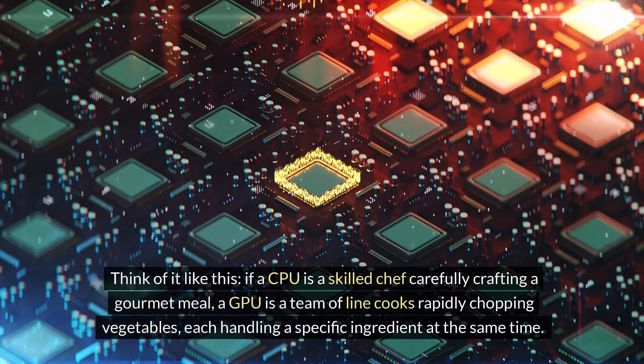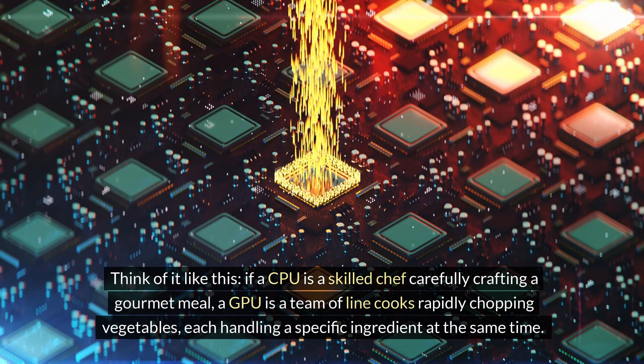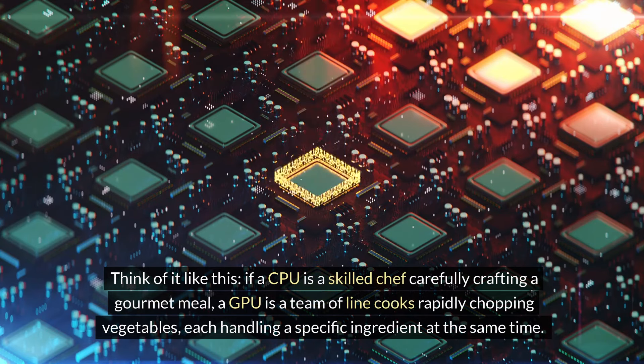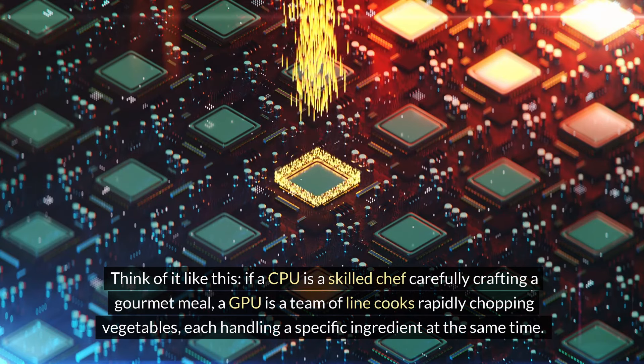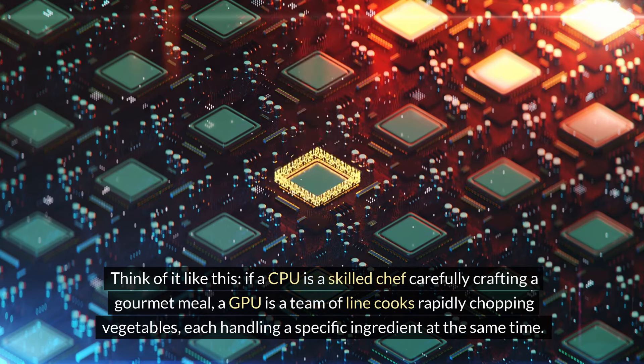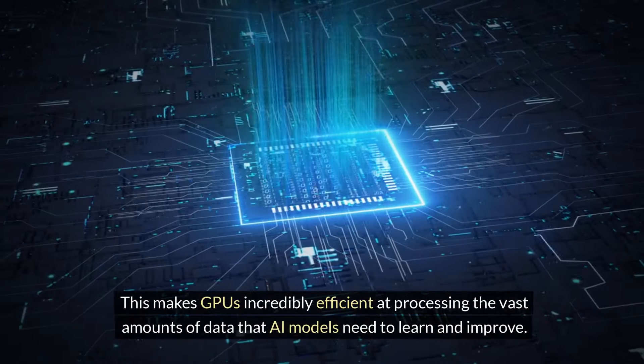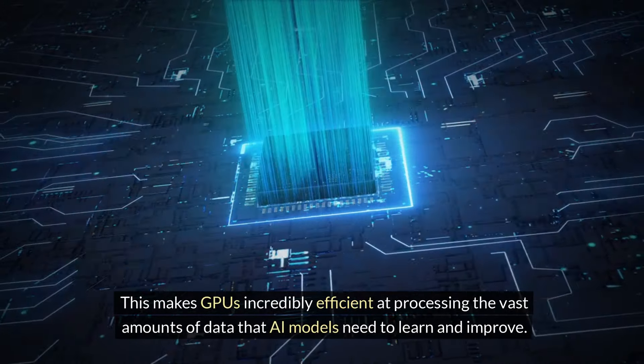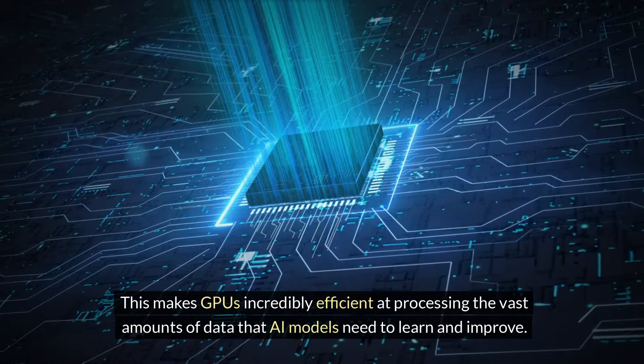Think of it like this: if a CPU is a skilled chef carefully crafting a gourmet meal, a GPU is a team of line cooks rapidly chopping vegetables, each handling a specific ingredient at the same time. This makes GPUs incredibly efficient at processing the vast amounts of data that AI models need to learn and improve.